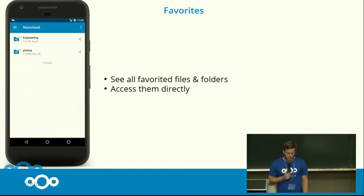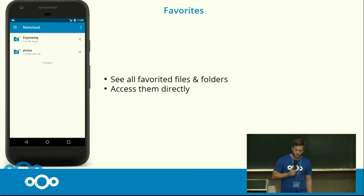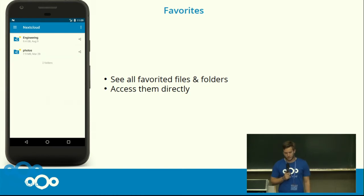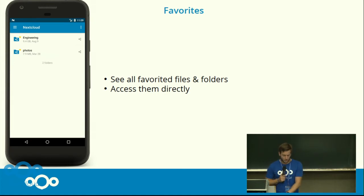In the drawer you can now directly access your favourited files, which are marked on the web UI or on the Android client with a star. You can just access them directly, show images to your friends, or if it's a note text file you can just edit it. It's really nice to have favourites directly accessible.